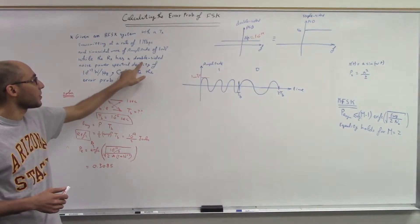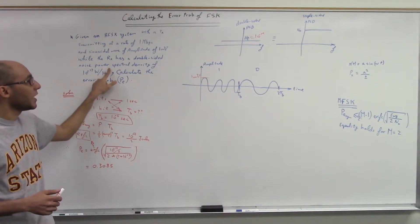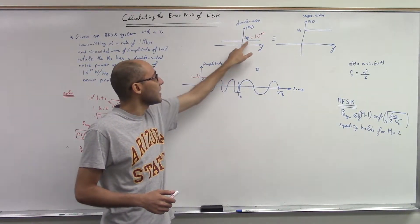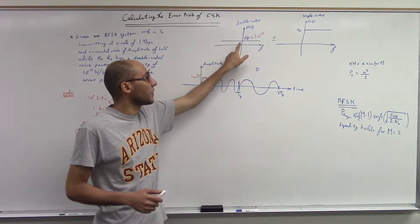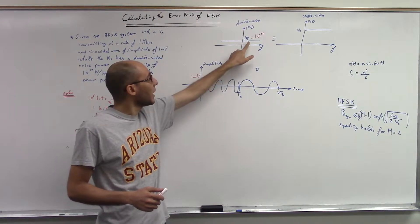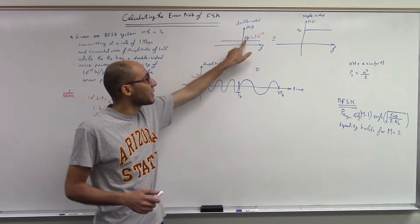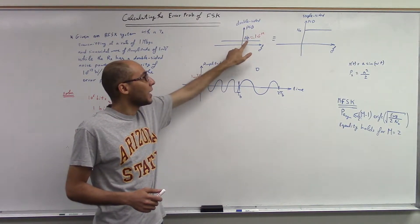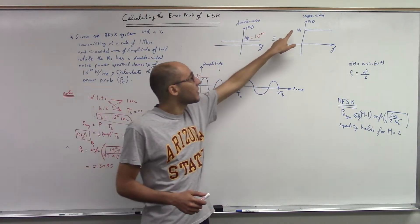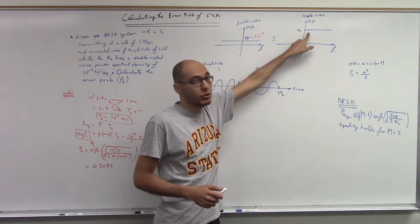What does it mean that I have a double-sided power spectral density? It means that the power spectral density has values in both the negative and the positive values, and this level is defined to be n_0 over 2. However, in a single-sided, this level is equal to n_0.